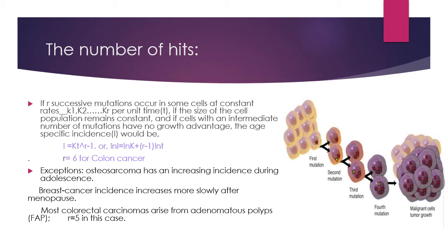In the case of colon cancer, r equals six. There are exceptions which do not follow this formula: osteosarcoma, breast cancer, and most commonly colorectal carcinomas. Osteosarcoma has an increasing incidence during adolescence, whereas in breast cancer incidence increases more slowly after menopause. Most colorectal carcinomas arise from adenomatous polyps, which have growth advantages — so they do not follow this particular formula.